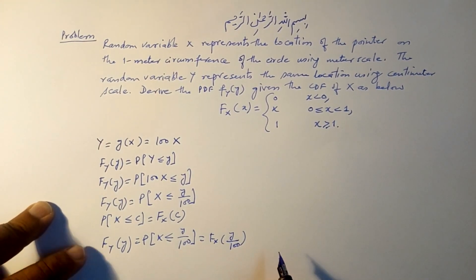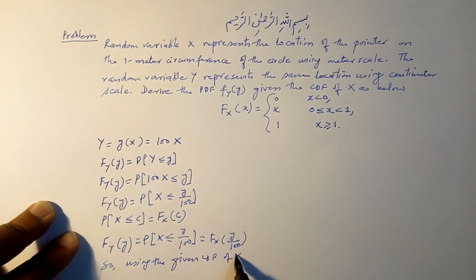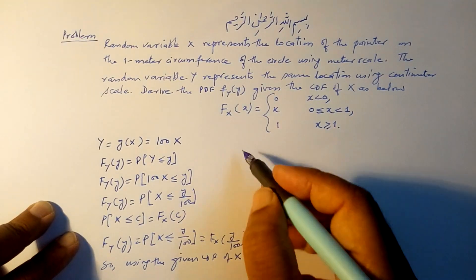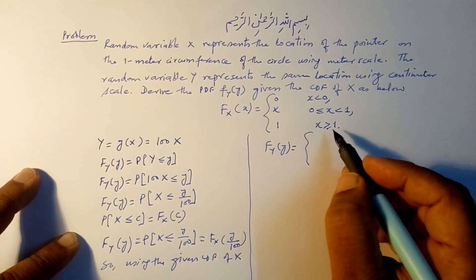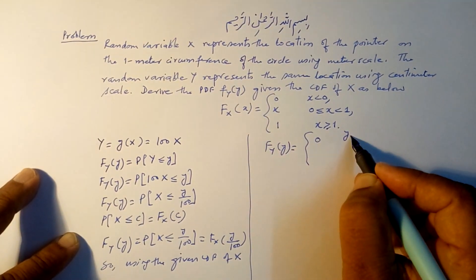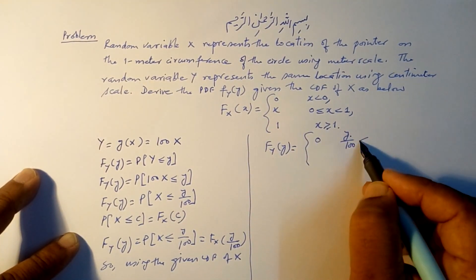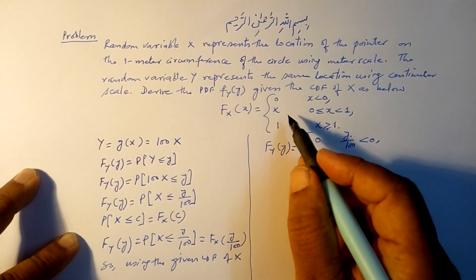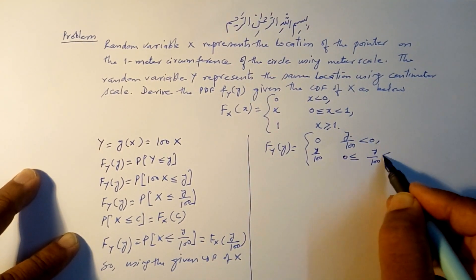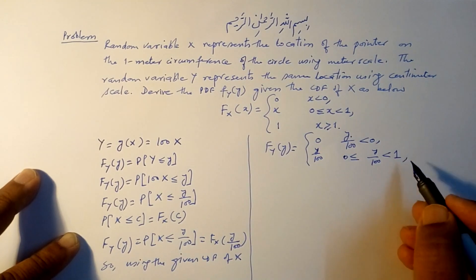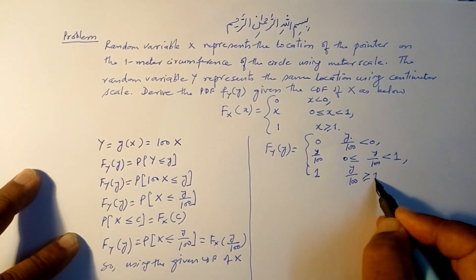Using the given CDF of X, we substitute X with y/100. So the CDF of Y is: F_Y(y) = 0 for y/100 < 0, the expression from F_X for 0 ≤ y/100 < 1, and 1 for y/100 ≥ 1.